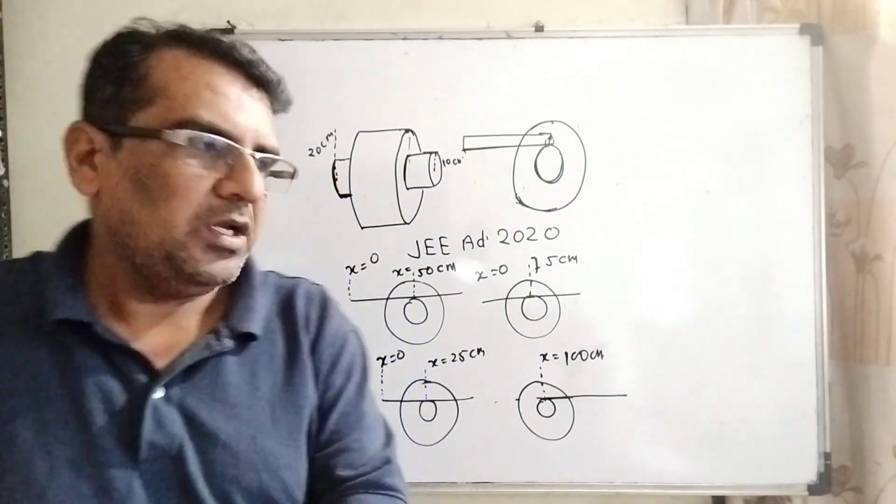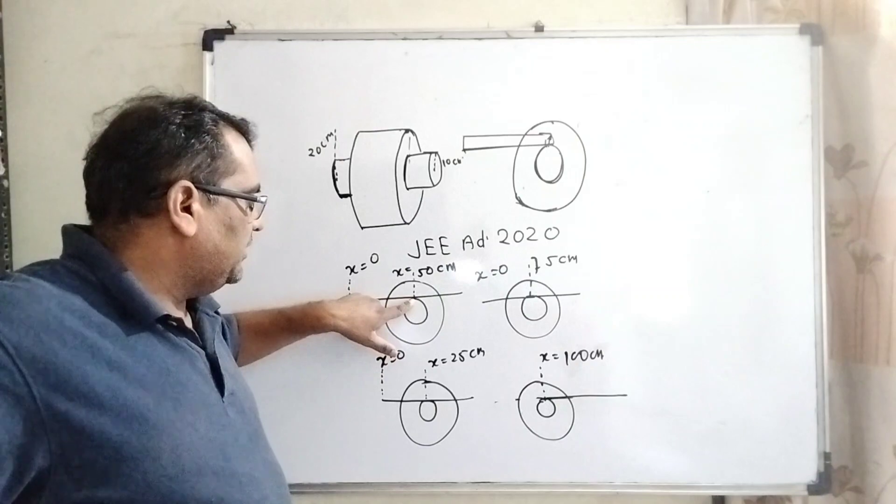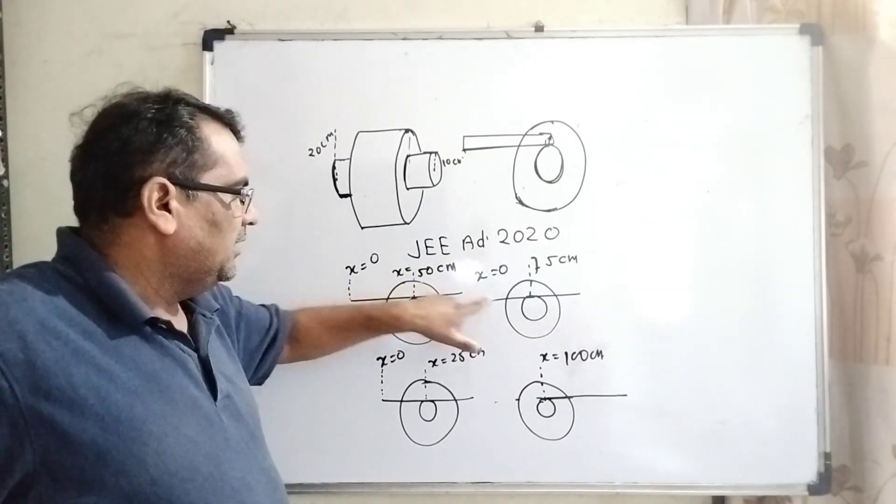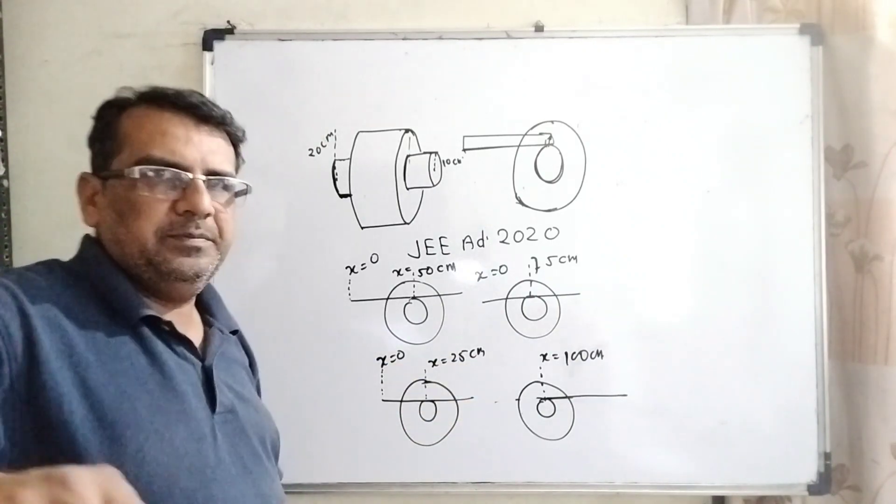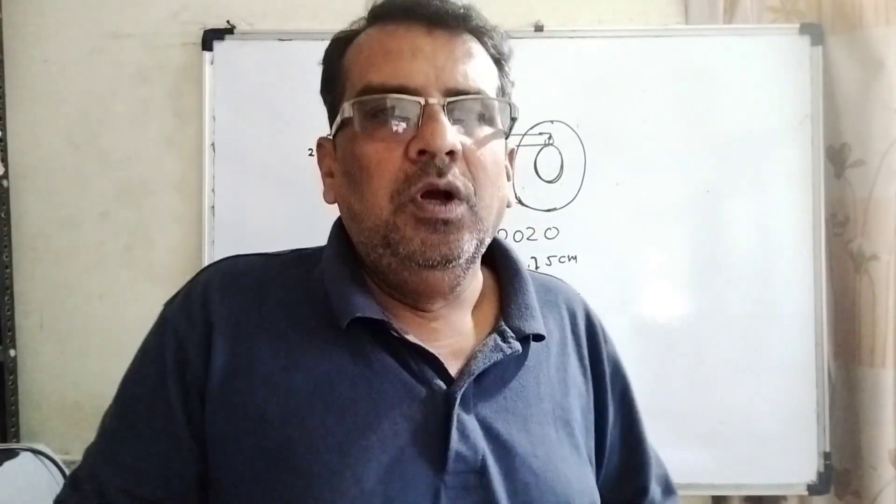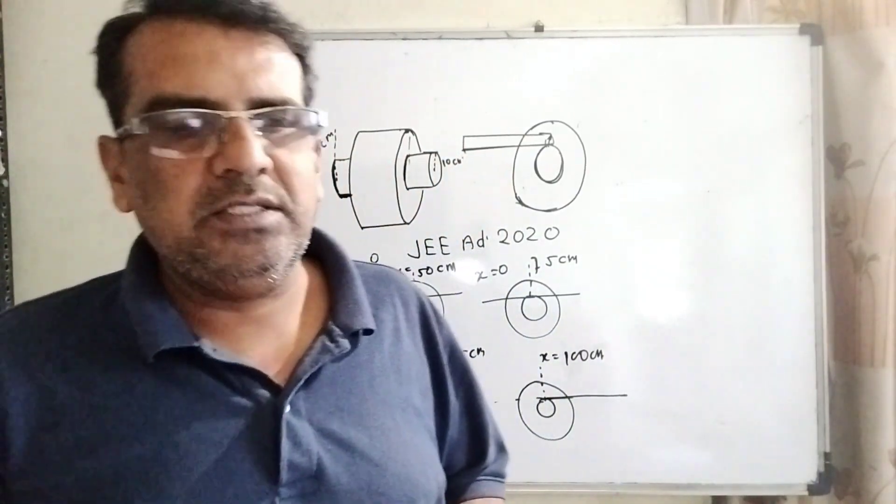When this scale moved, it shows the middle point. This point is 50 centimeters. This point is 75, 25, and 100 centimeters. Okay. Now you can understand this question by seeing this experiment.